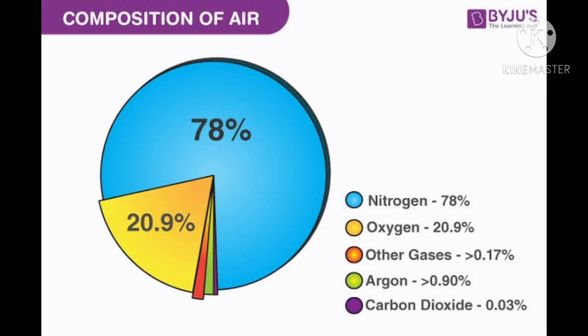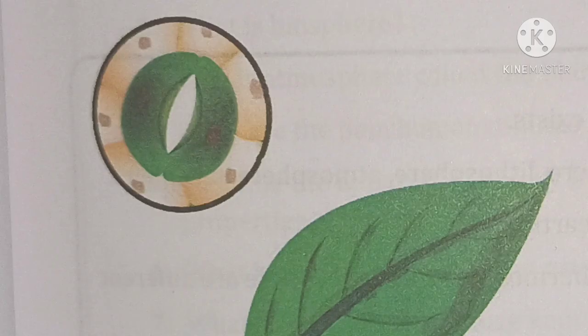For example, air over industrial cities usually has a higher amount of carbon dioxide than the air over open spaces. Air in coastal areas may have more water vapor than inland areas. Air also contains more water vapor in the rainy season. The amount of dust in the air is more in windy places than in other areas.